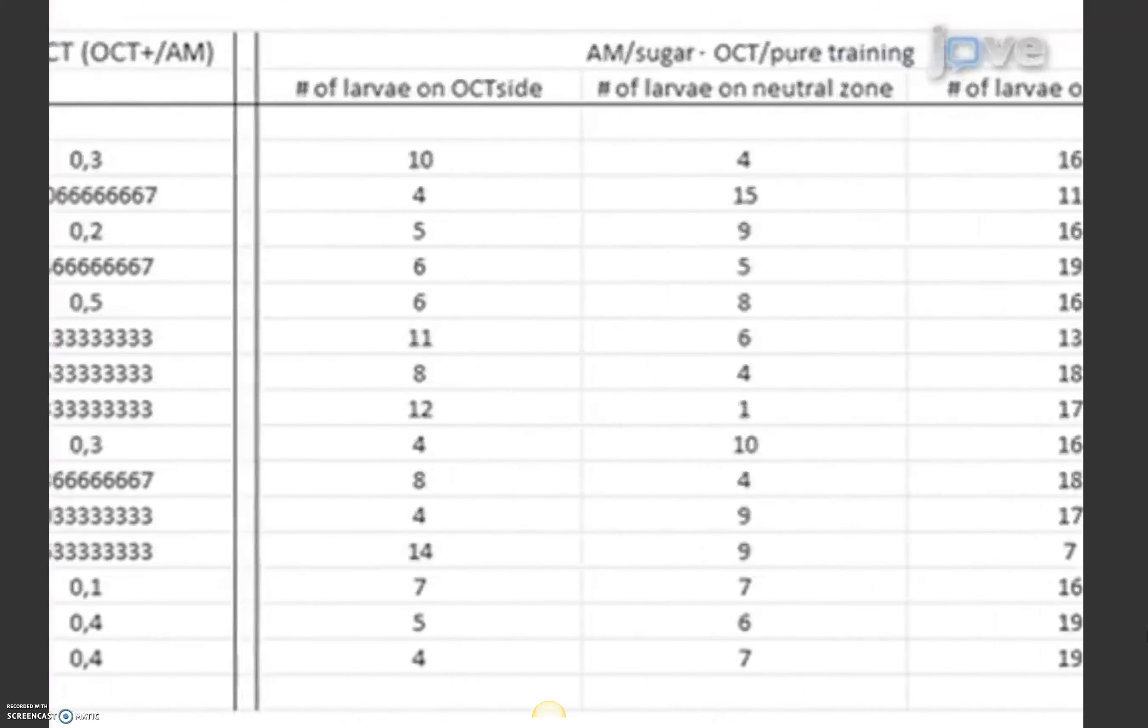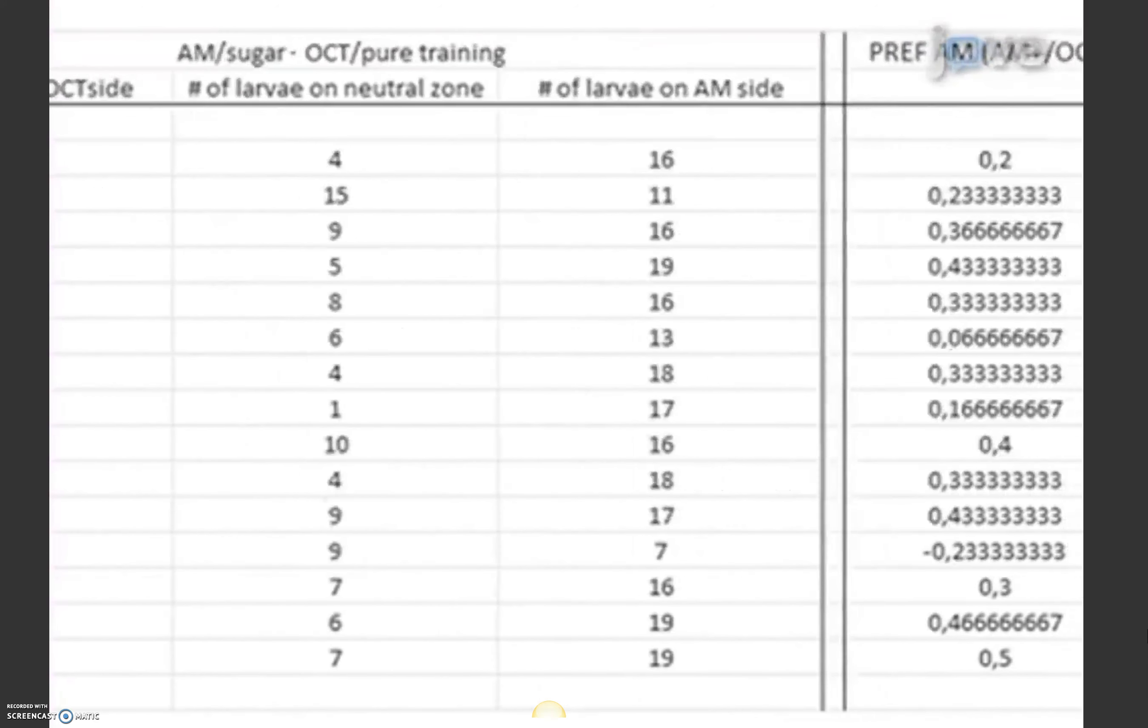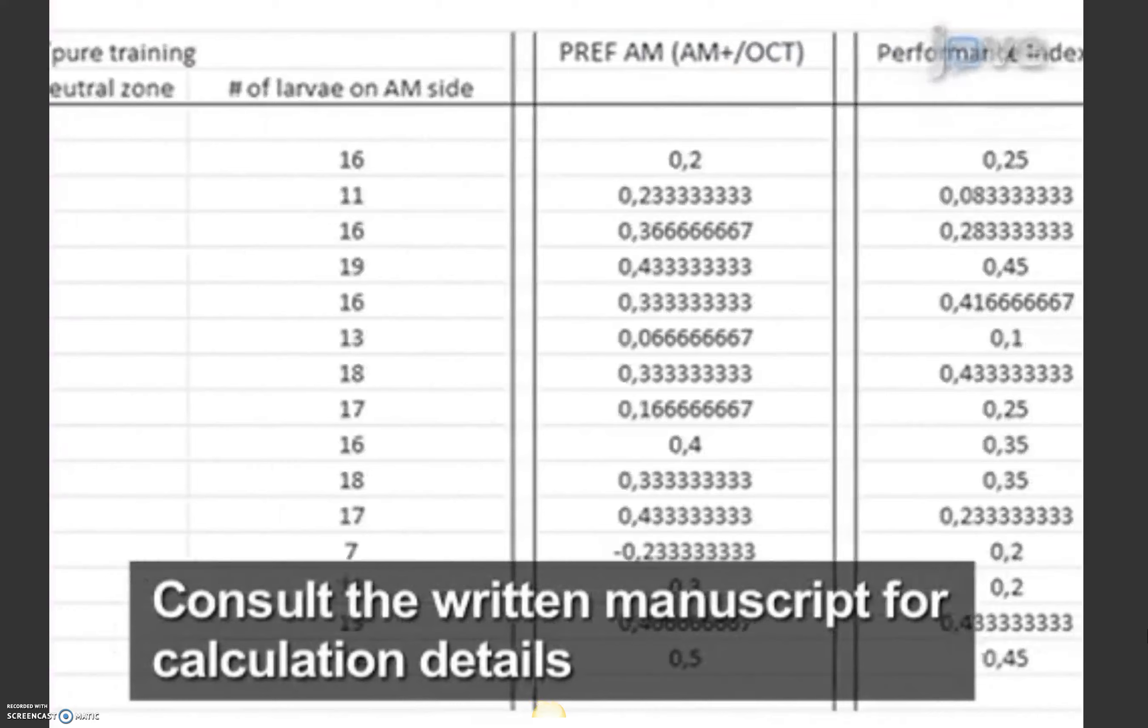Out of this data, preference indices were calculated and performance indexes were derived from the reciprocally trained groups.